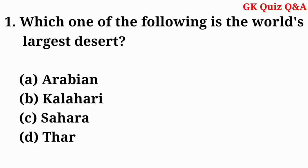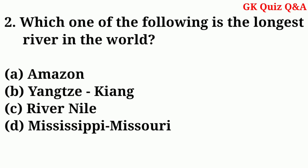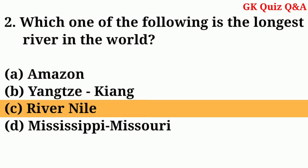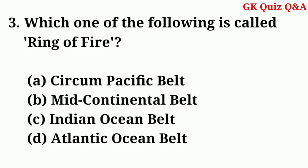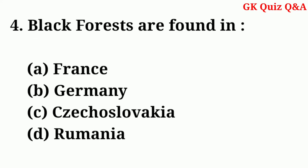Which of the following is the world's largest desert? Answer: C — Sahara. Which one of the following is the longest river in the world? Answer: C — River Nile. Which of the following is called the Ring of Fire? Answer: A — Circum-Pacific Belt.